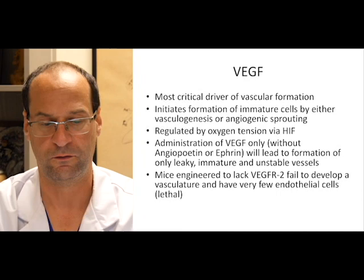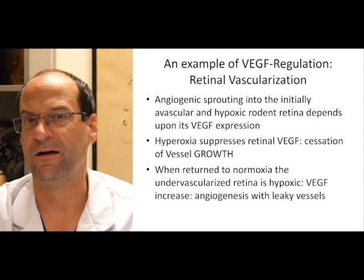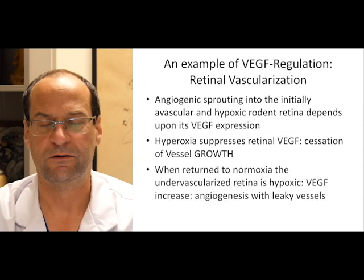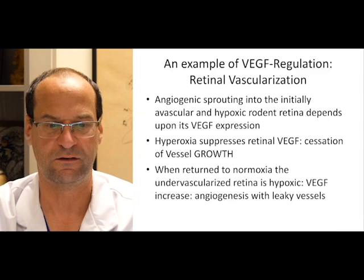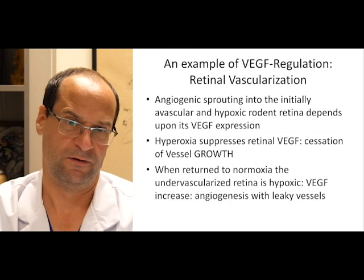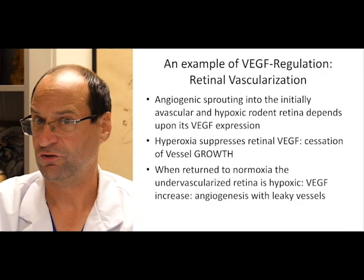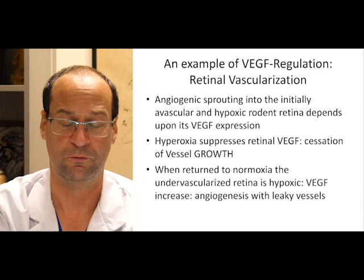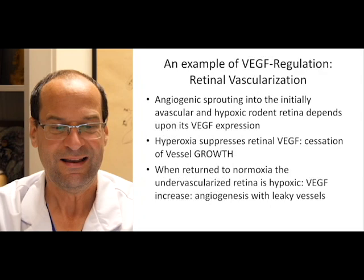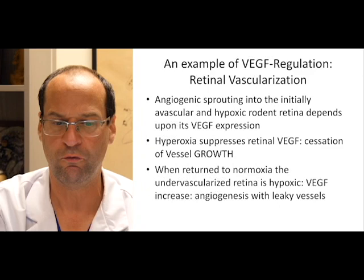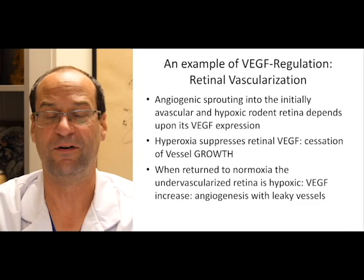The best example of how VEGF works is retinal vascularization. Normally there is angiogenic sprouting into the initially avascular and hypoxic rodent retina. If you put those rodents under hyperoxia, you will have less HIF, therefore less VEGF, and therefore no vessel ingrowth into the retina. If you then put the rodent back into normoxic conditions, the retina becomes hypoxic because it is now under-vascularized, VEGF will increase, and you will have angiogenesis with leaky vessels.